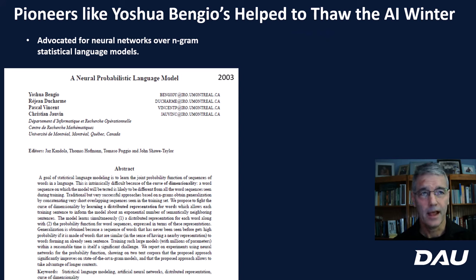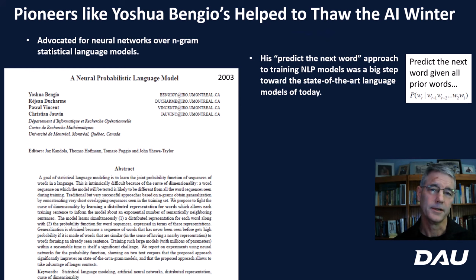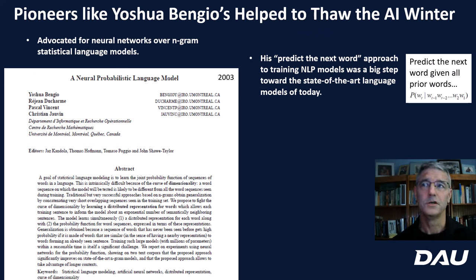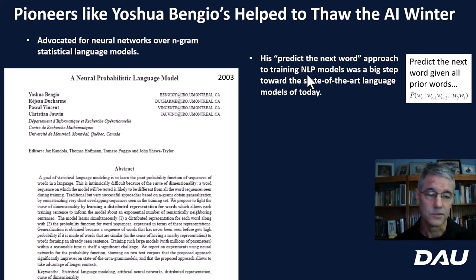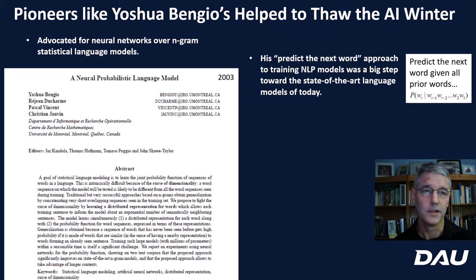In his 2003 paper, they advocated for neural networks to be used instead of n-gram statistical language methods that were popular at the time. N-grams are essentially word predictors — they use the preceding words, like 'peanut butter and' to predict 'jelly,' which would be called a quad-gram because there are four words involved. There were many applications at the time for predicting the next word, and Bengio and his team advocated that neural networks were the way to go. He also advocated that predicting the next word should be used to train neural networks to make natural language models — NLPs like ChatGPT are trained that way today. He was pretty profound in 2003 when they came up with this paper.